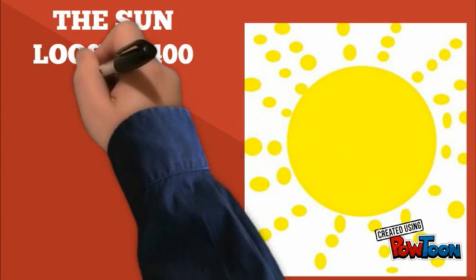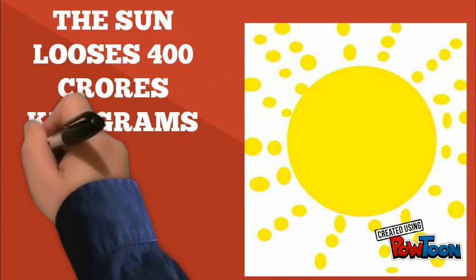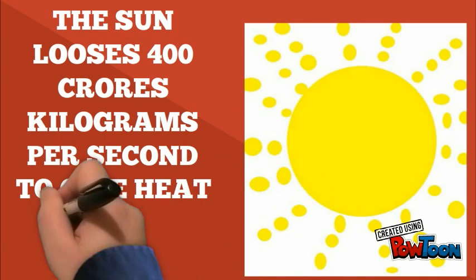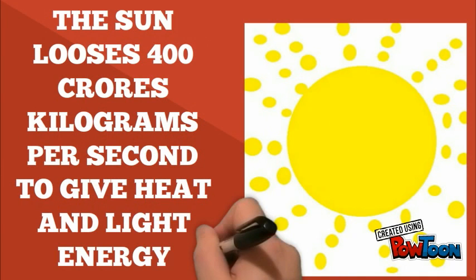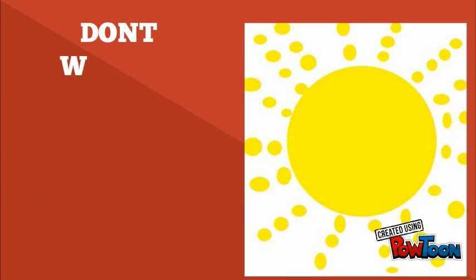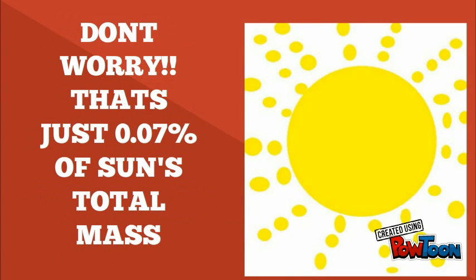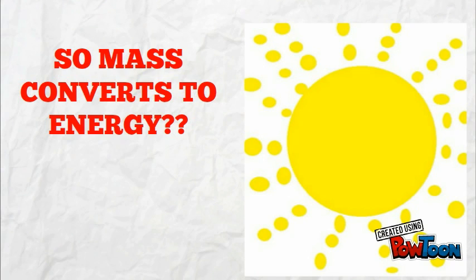The sun loses 400 crore kilograms per second to produce heat and light energy. Don't worry, that's just 0.07% of sun's total mass.